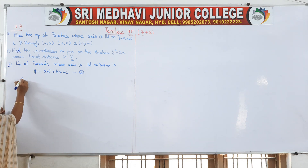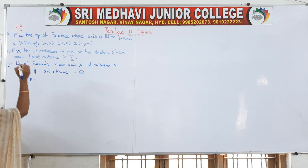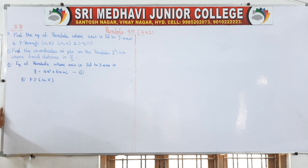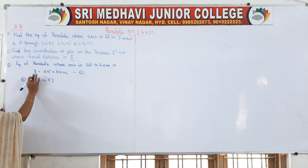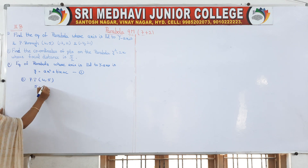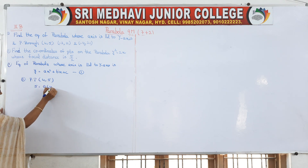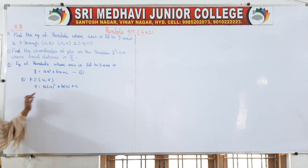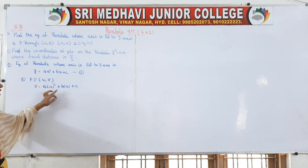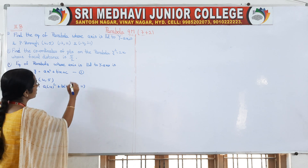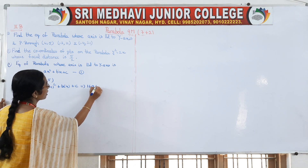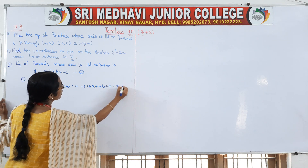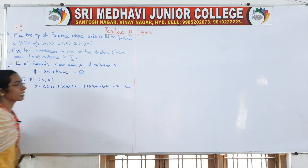This parabola passes through the point (4, 5). Substituting: in place of y put the y-coordinate, and in place of x put the x-coordinate. So we get a into 4² plus b into 4 plus c equals 5, which gives us 16a + 4b + c = 5. Consider this as your second equation.